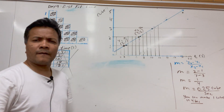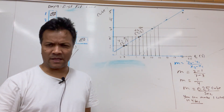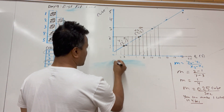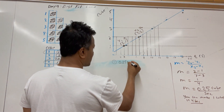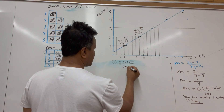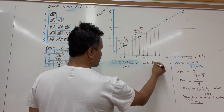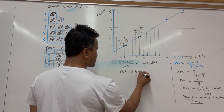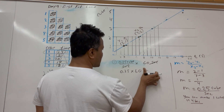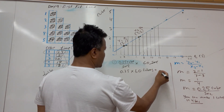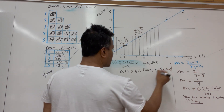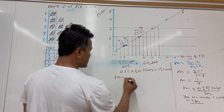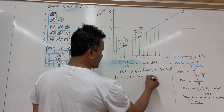Problem number one: in one minute, how many cubes can you make? Use the slope: 0.25 cubes per second times 60 seconds — the seconds cancel — and you get 0.25 times 60, which is 15 cubes in one minute.